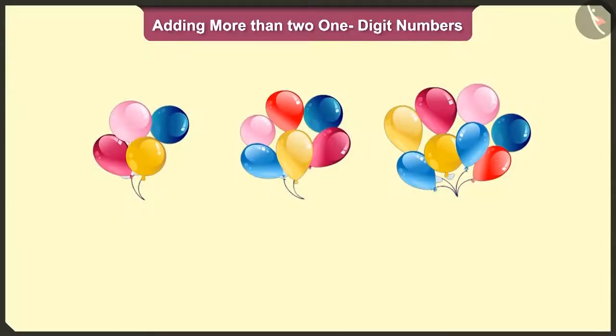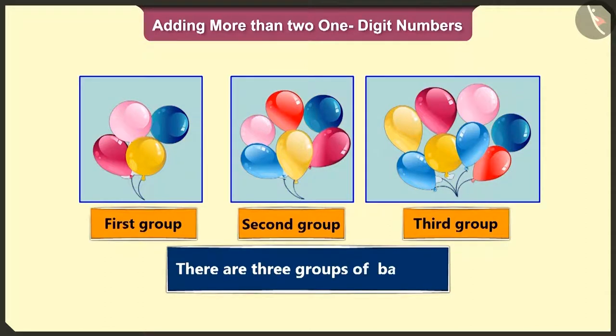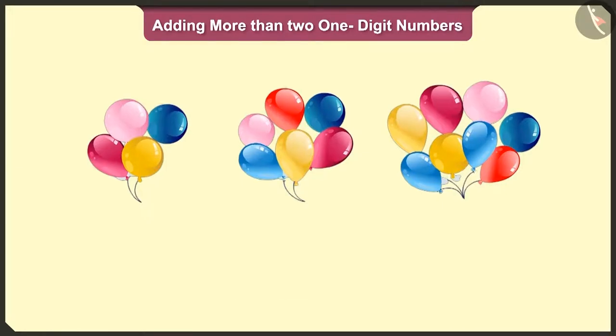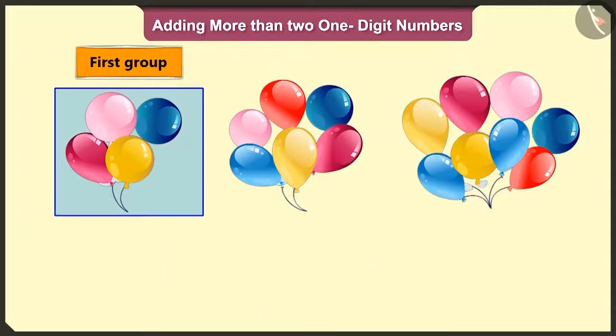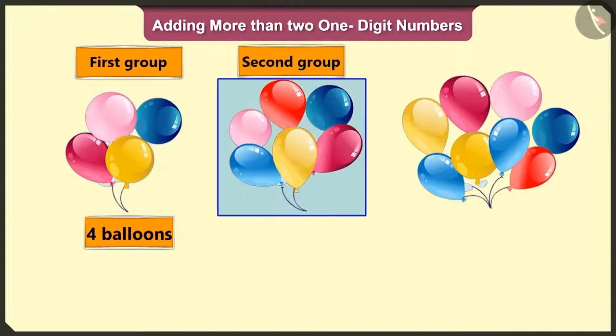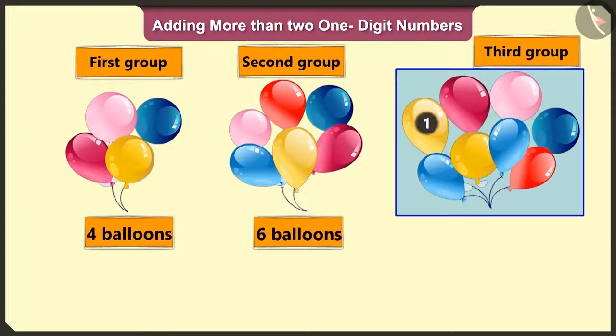Pilloo, can you say how many groups of balloons are there with the seller? Yes, there are three groups of balloons. Can you tell me how many balloons are there in each group? In the first group, one, two, three, and four balloons. In the second group, one, two, three, four, five, and six balloons. And in the third group, there are one, two, three, four, five, six, seven, and eight balloons.